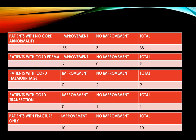Among patients with no cord abnormality, improvement was seen in 35 out of 38 patients. In cases of cord edema, all nine patients showed improvement. In cord hemorrhage, neither of the two patients showed improvement. In cord transection, the one patient expired. In patients with only fracture, all 10 showed improvement.